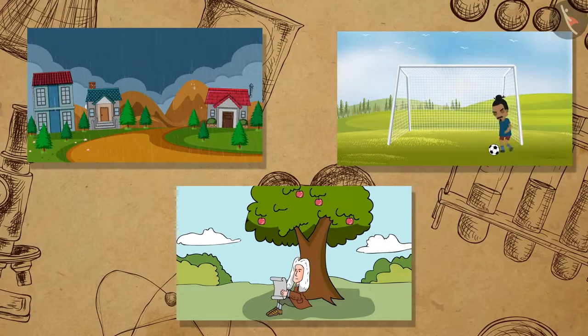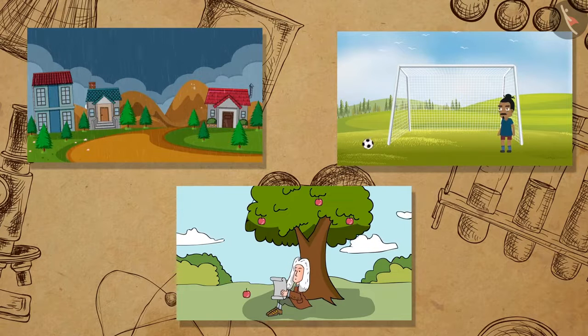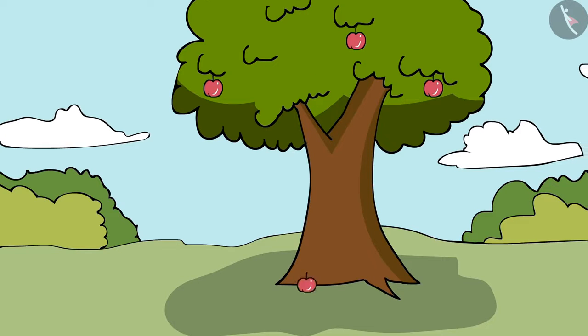Therefore, we can conclude that rain, football and apples are attracted to the earth. But do the objects also attract the earth? If yes, then why don't we see the earth moving towards the apple?